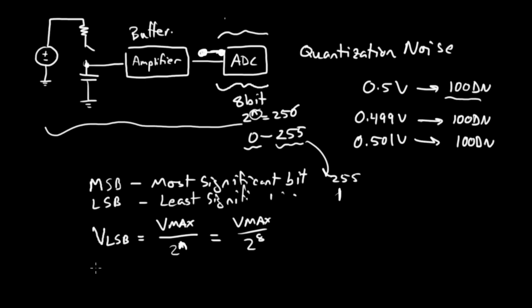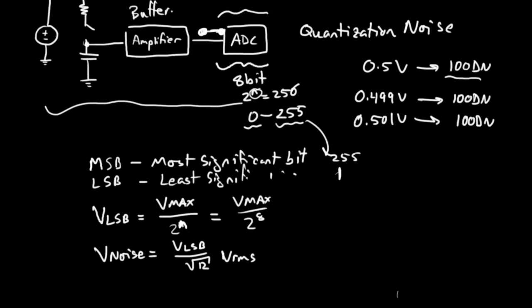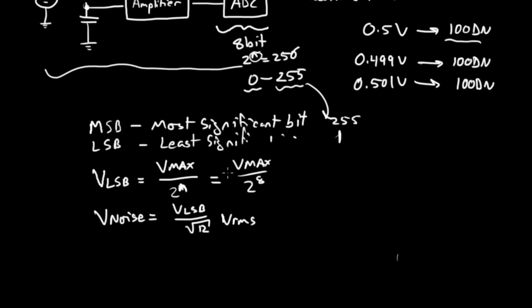Now the quantization noise, V noise, is equal to VLSB, which we calculated in the line above that, divided by root 12. And this is going to be an RMS value, voltage RMS. Why is it root 12? Well, that's another discussion. I'm not going to go into it here. For now, you just need to know that it is root 12. To help clarify this, I'm going to work through an example.